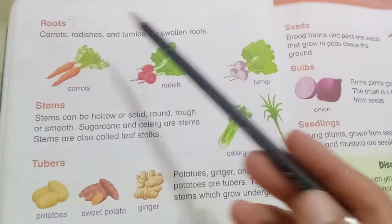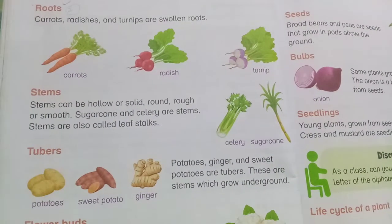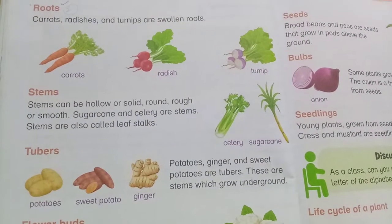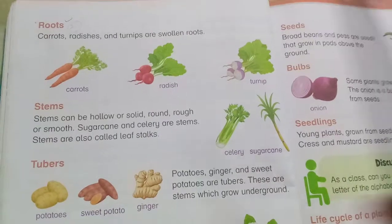This unit is about roots, stems, tubers, flower buds and fruits. So let's start from roots.